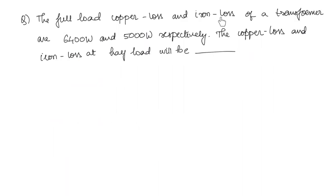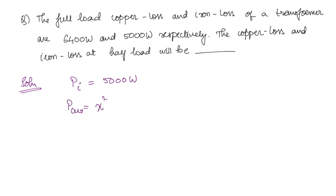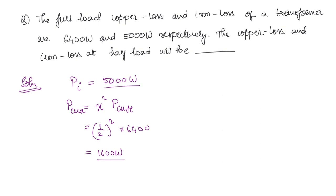Next problem: A transformer has full load copper loss of 6400 watts and iron loss of 5000 watts. Find the copper loss and iron loss at half load. The iron loss is the core loss — it remains constant with respect to load, so it stays at 5000 watts. The copper loss at fraction x of load is x² × full load copper loss. At half load, x = 1/2, so copper loss = (1/2)² × 6400 = 1600 watts.